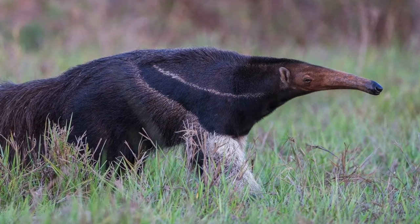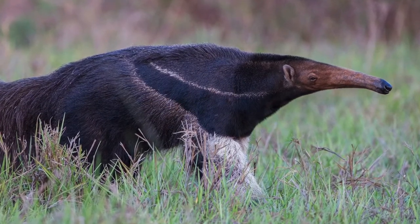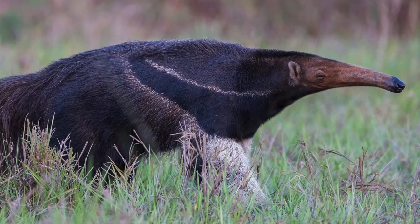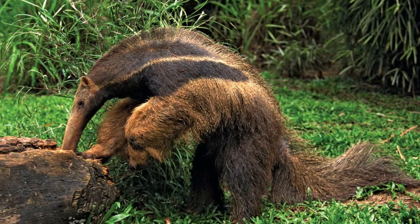There are two different species of lesser anteater, but they look very similar. Lesser anteaters are only about half the length of giant anteaters. They also have shorter muzzles.